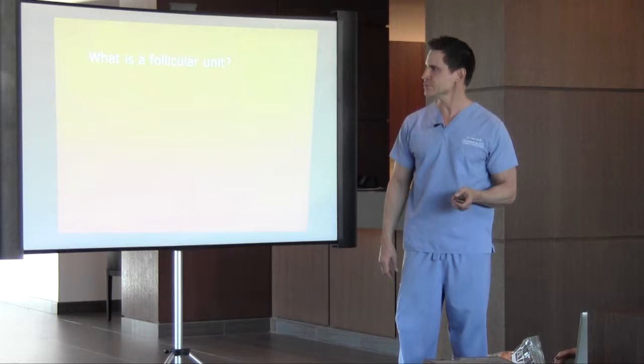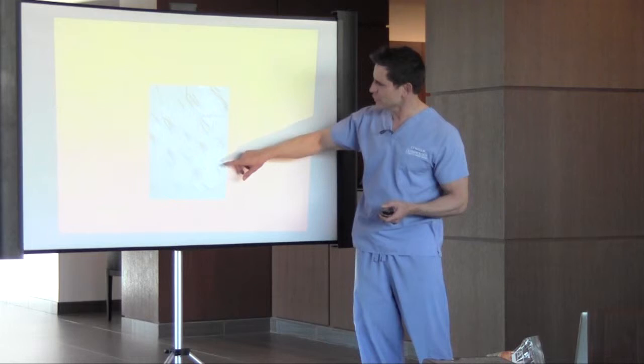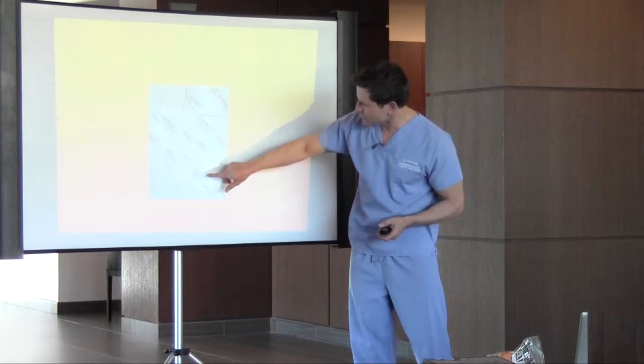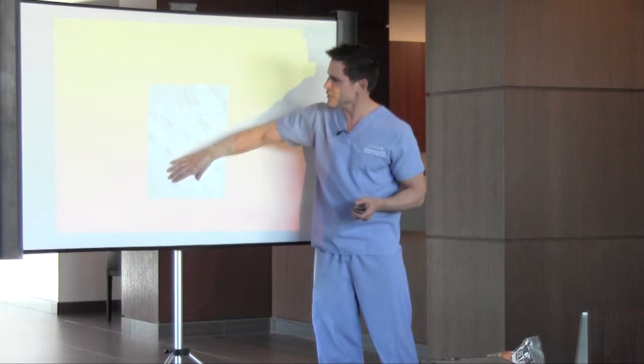We talked about what a follicular unit is, and you can see here that this is the scalp after we harvested it. You can see how they grow — here's one hair, here they're growing two hairs, here there are three growing, and sometimes there's a cluster of four. When we do strip grafting, we cut out a piece of skin and then cut these into individual hairs.